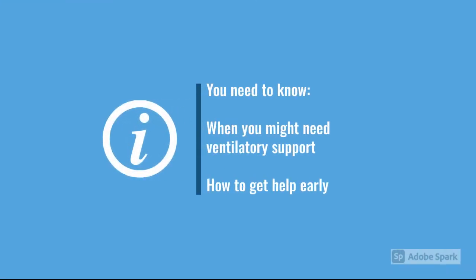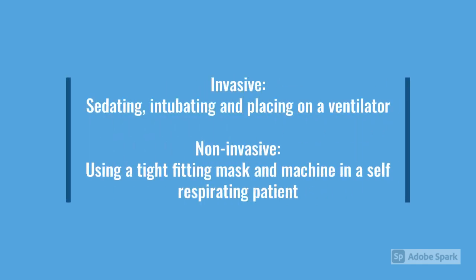In terms of what we're classifying as ventilatory support, there are two big arms. Arm A is invasive ventilatory support, which is intubating with an ET tube and putting them on a ventilator. And there's non-invasive ventilation, which is essentially a tight-fitting mask, either using CPAP or BiPAP, which we'll talk more about later. The key is you don't need a thorough understanding — this is just a brief overview.